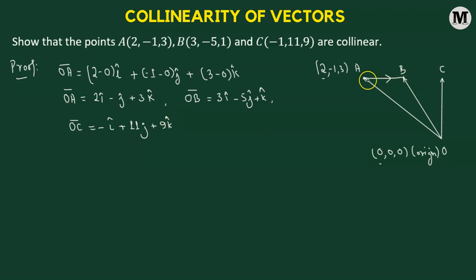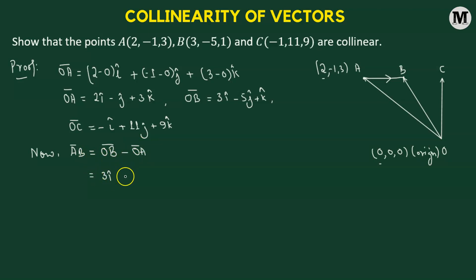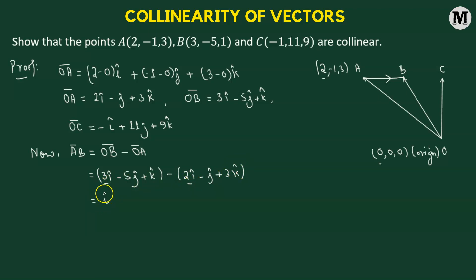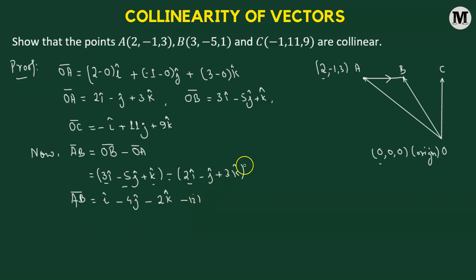Now we join points A and B with a directed line segment to compute vector AB. Vector AB equals the position vector of the endpoint minus the position vector of the initial point, so AB = OB minus OA. That gives us (3i-cap minus 5j-cap plus k-cap) minus (2i-cap minus j-cap plus 3k-cap), which simplifies to i-cap minus 4j-cap minus 2k-cap. Let's label this as equation (1).